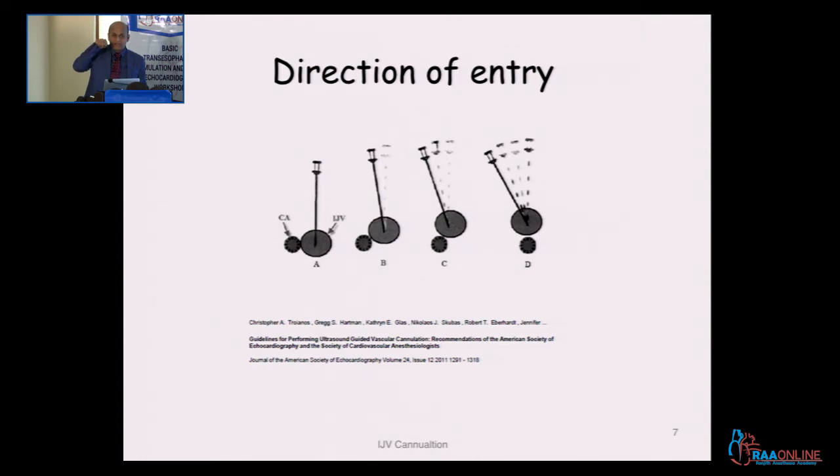That's why we teach that the direction of the needle should be facing towards the ipsilateral nipple, so that you are going towards the lateral side and not facing your needle direction towards the suprasternal notch. In that case you will encounter the carotid artery. So depending upon the position—if it is coming more anterior, your direction is getting more and more lateral, as you can see here.